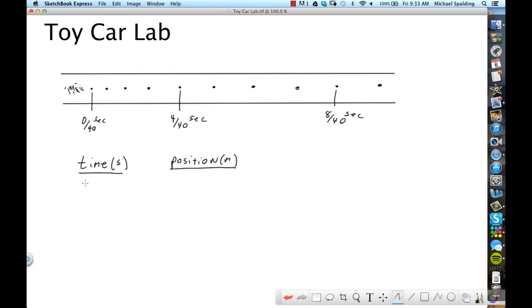All right. So your times go like this, every 4/40ths. So 0/40ths, 4/40ths, 8/40ths, 12/40ths, and you're going to go all the way to at least 40/40ths. Anywhere between 40/40ths and 60/40ths, which will be one second to one and a half seconds.